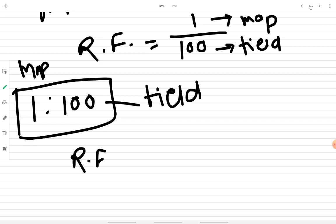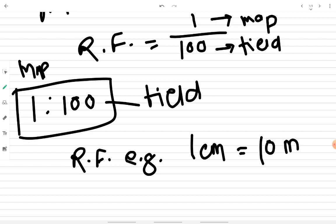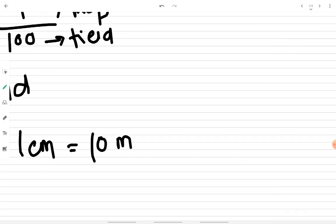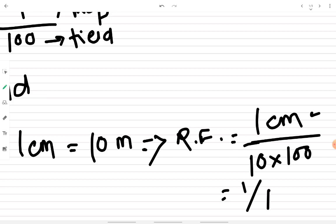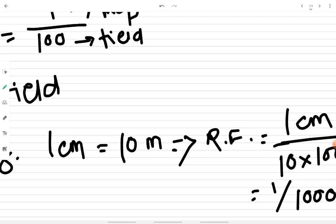Now let's see another example. We have been provided with an engineer scale on a map which says one centimeter is equal to ten meters. To convert this into RF, we put the map distance in the numerator — one centimeter — and the field distance in the denominator. We convert ten meters to centimeters: ten times one hundred equals one thousand centimeters. Therefore the RF becomes one divided by one thousand.